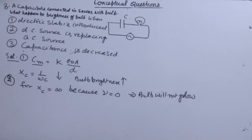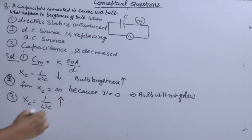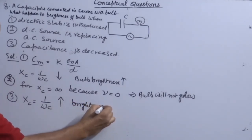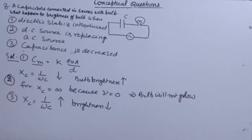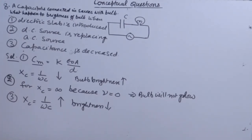If capacitance decreases, XC = 1/ωC increases, then brightness decreases. The fundamental principle is: if resistance of the circuit increases, current decreases; if resistance decreases, current increases. The brightness of the bulb depends on the strength of the current flowing through the circuit — larger the current, more the brightness.